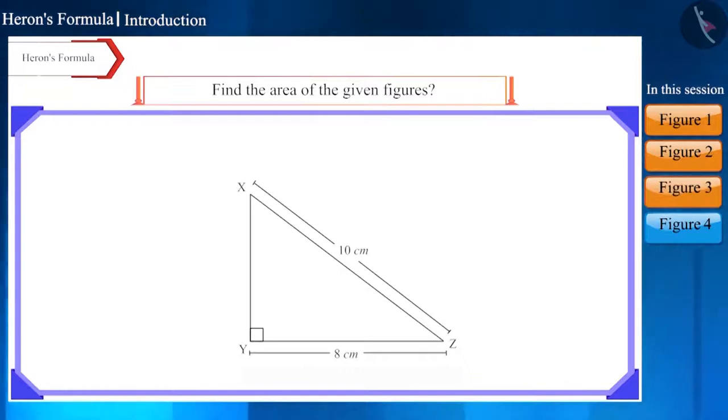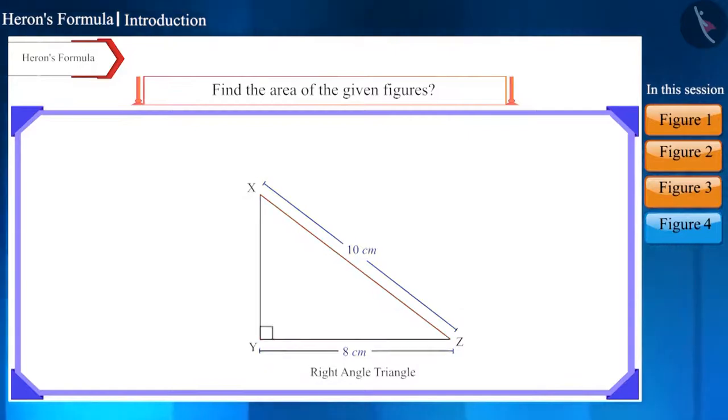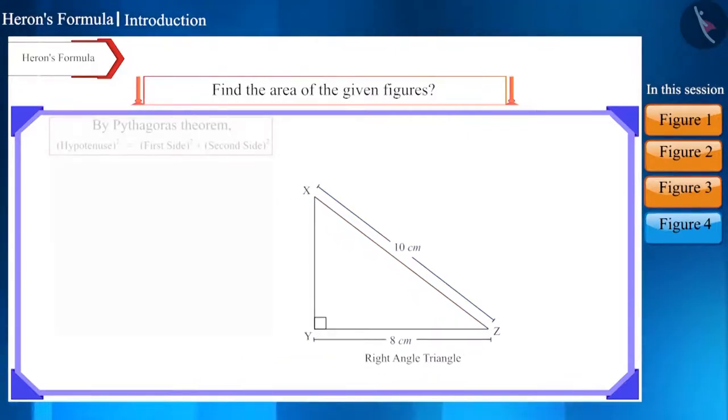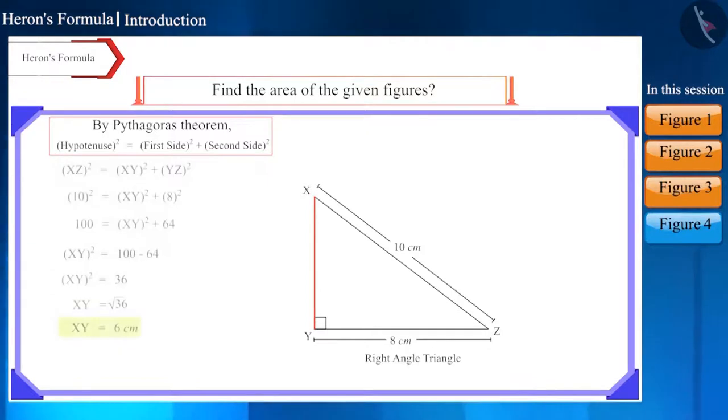Now let's move to the next triangle. This is a right-angled triangle whose hypotenuse is 10 cm and one side is 8 cm. You can find the length of the third side using the Pythagoras theorem. We will get it equal to 6 cm. Now we know the length of all three sides of the triangle.